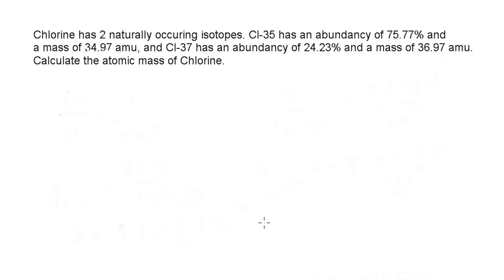It says chlorine has two naturally occurring isotopes. Chlorine-35 has an abundance of 75.77% and a mass of 34.97 atomic mass units. And chlorine-37 has an abundance of 24.23% and a mass of 36.97 atomic mass units. Calculate the atomic mass of chlorine.